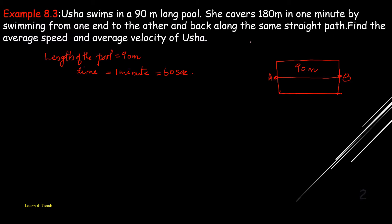Usha travels from A to B, then B to A, in 1 minute — swimming from one end to the other and back along the same straight path. The question asks us to find the average speed and average velocity.